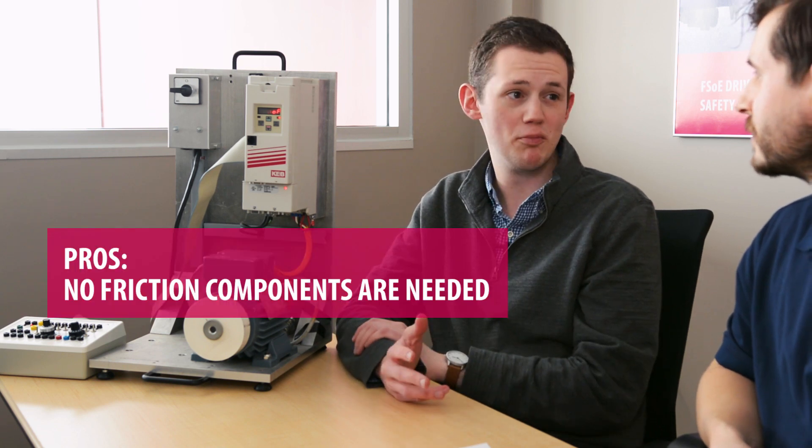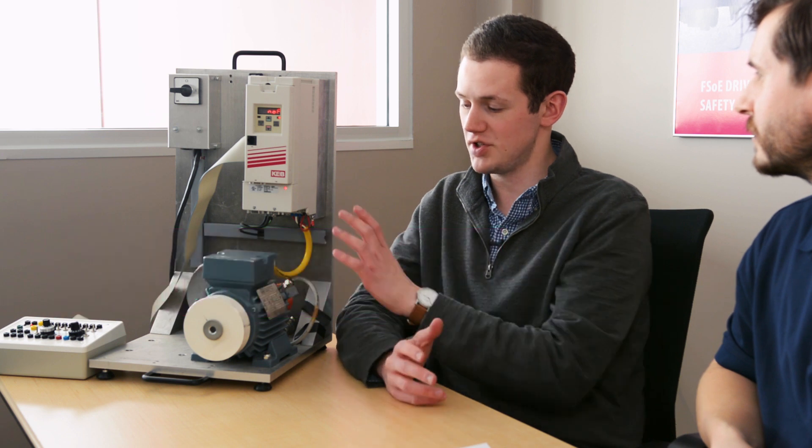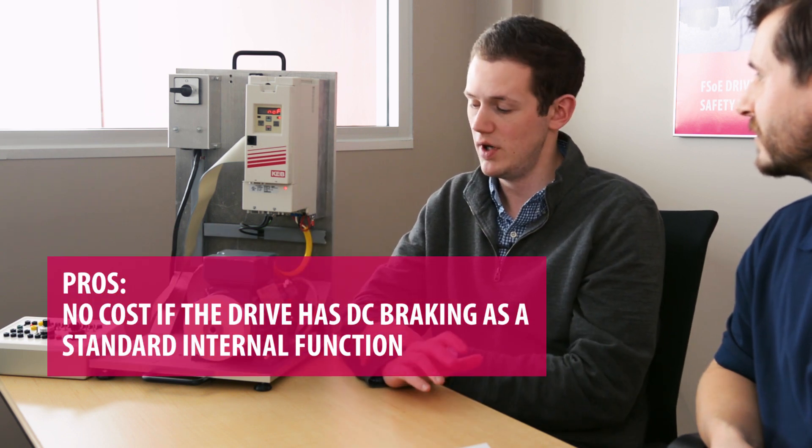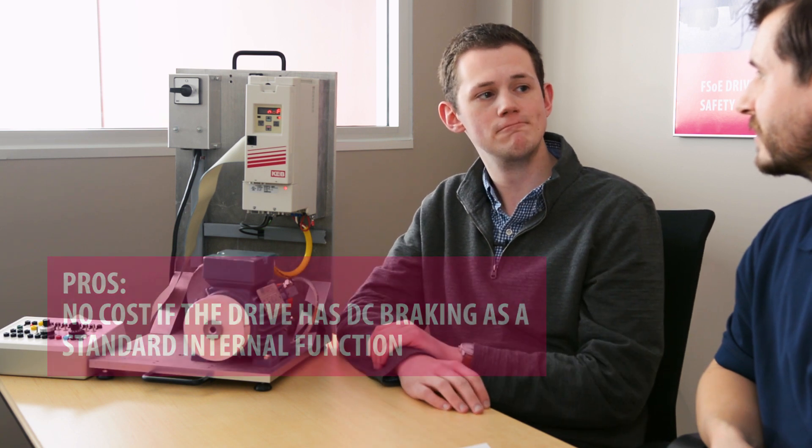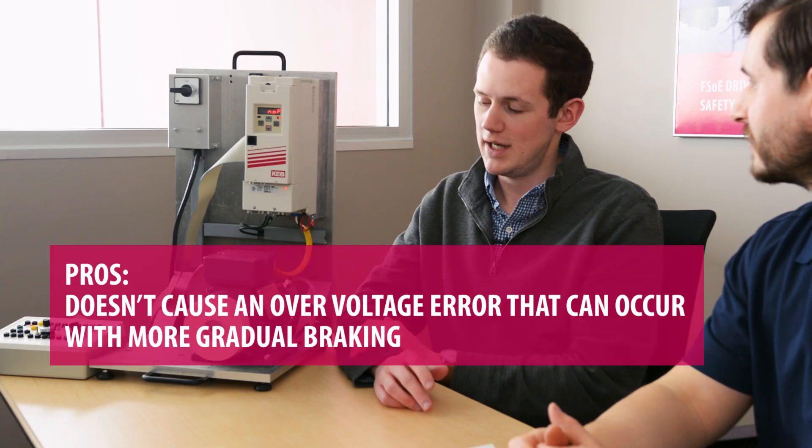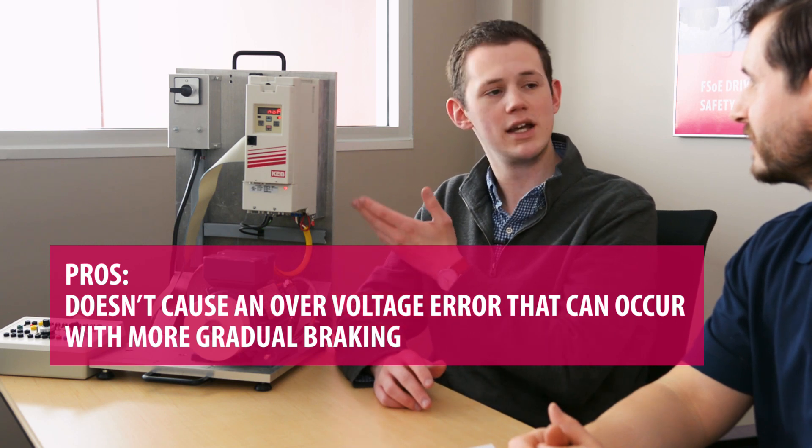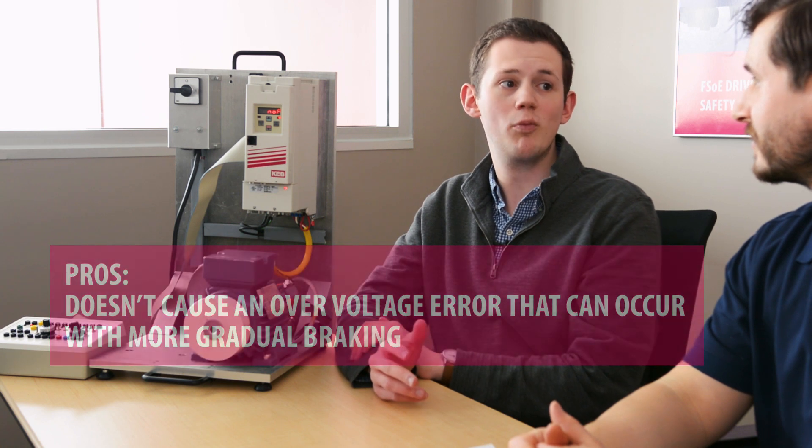And so what would be some pros and cons to using this in the field? So a definite pro is with DC braking, you don't need any additional components. There's no friction brake that's required. Literally, it's just using the drive and the motor itself, which you already have. So there's no extra braking equipment that is needed, no wear components that wear out. So essentially, there's really no components that need to be replaced or purchased in addition to the components you already have in your industrial automation application. You also, with high inertia loads, trying to decelerate them through the deceleration ramp of the drive, pushes a lot of that regenerative energy back into the drive and sometimes can cause an overvoltage or an E.OP error.